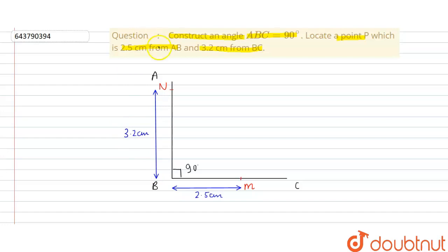And then we make two lines. First line is passing through N and parallel to BC. So make a line which is passing through N and parallel to BC. Let's say this is our straight line and another is passing through M and parallel to AB.